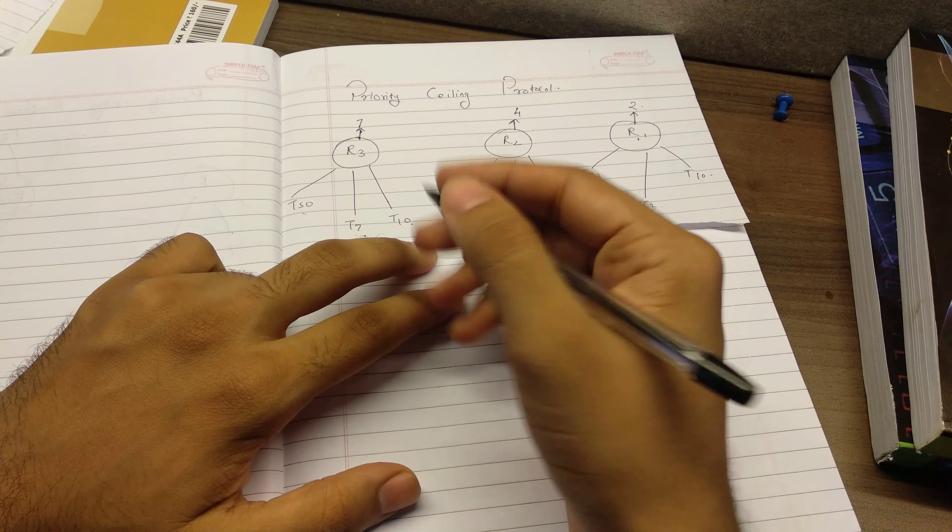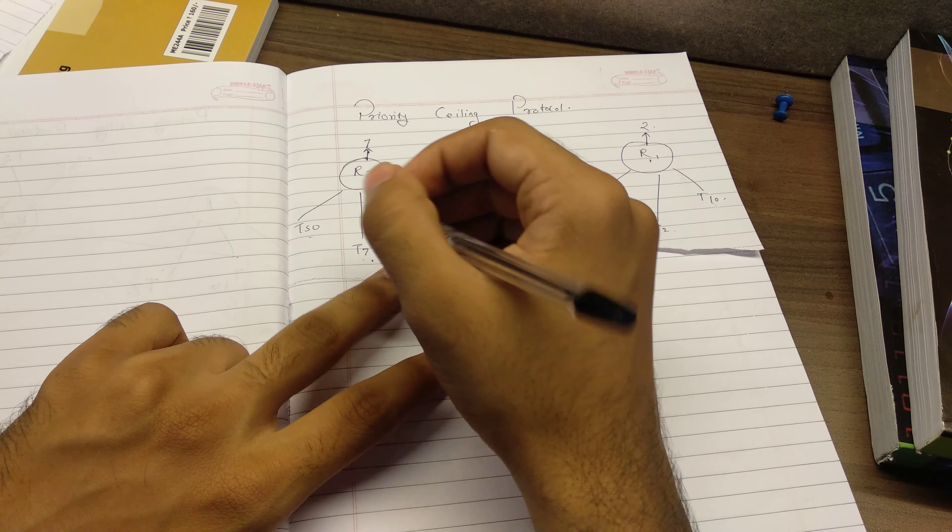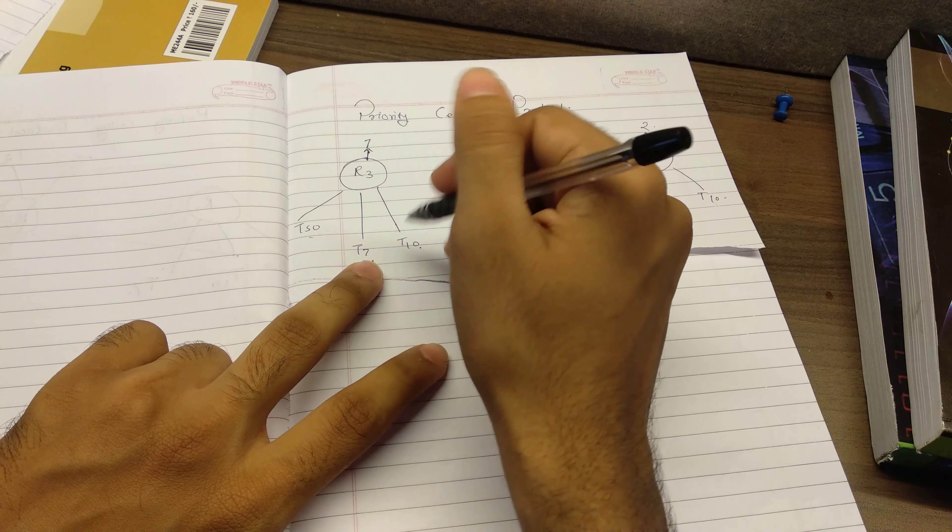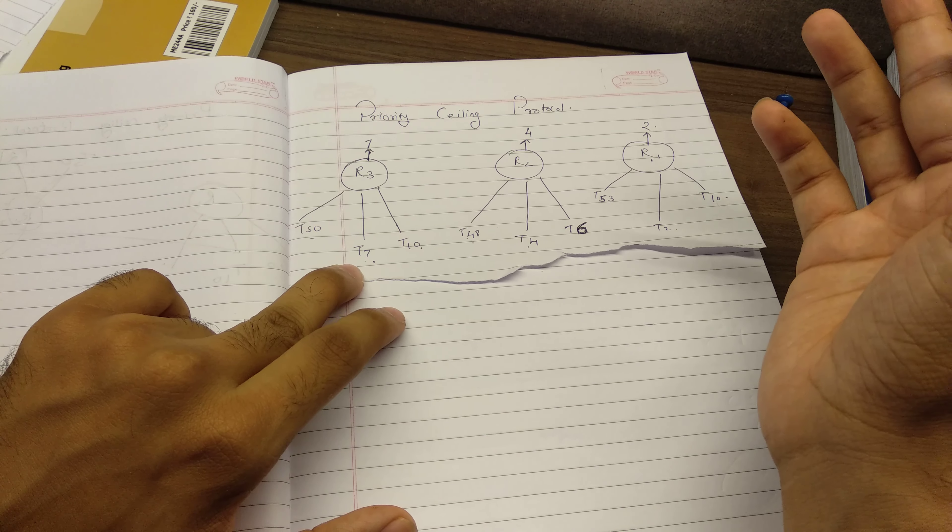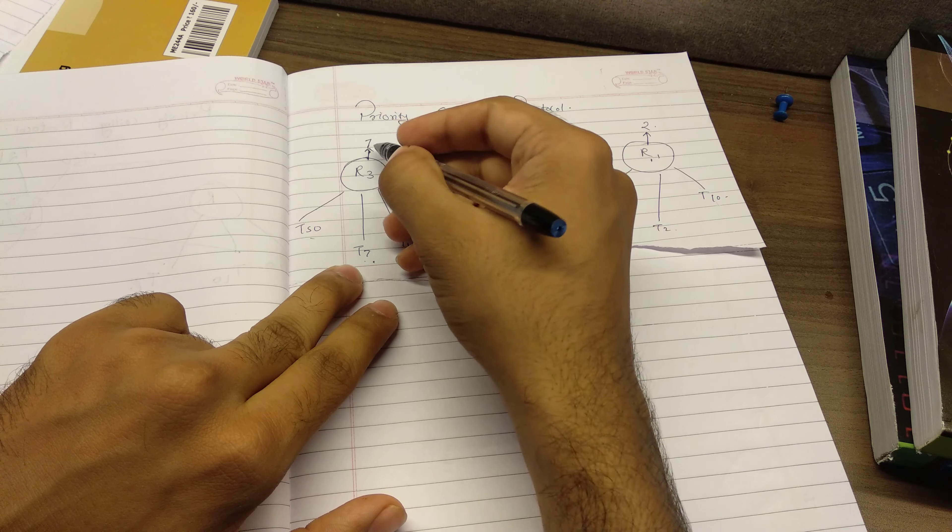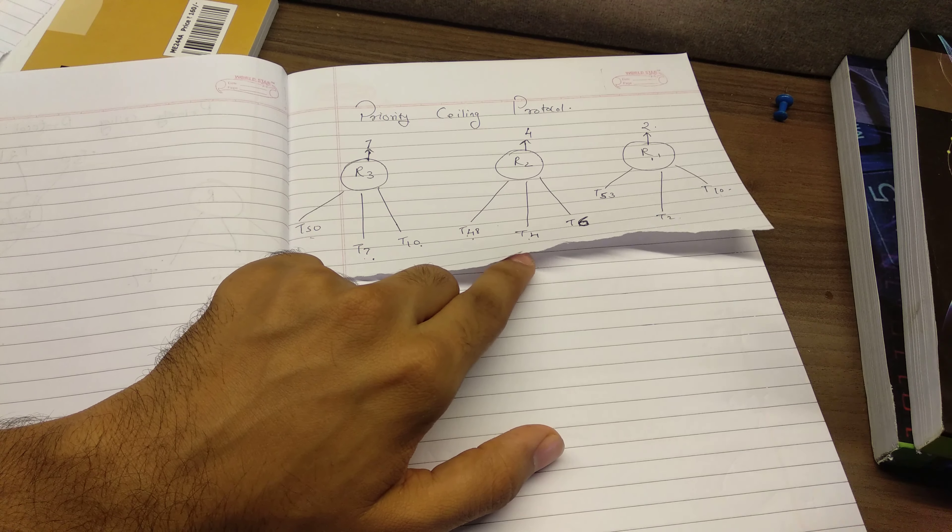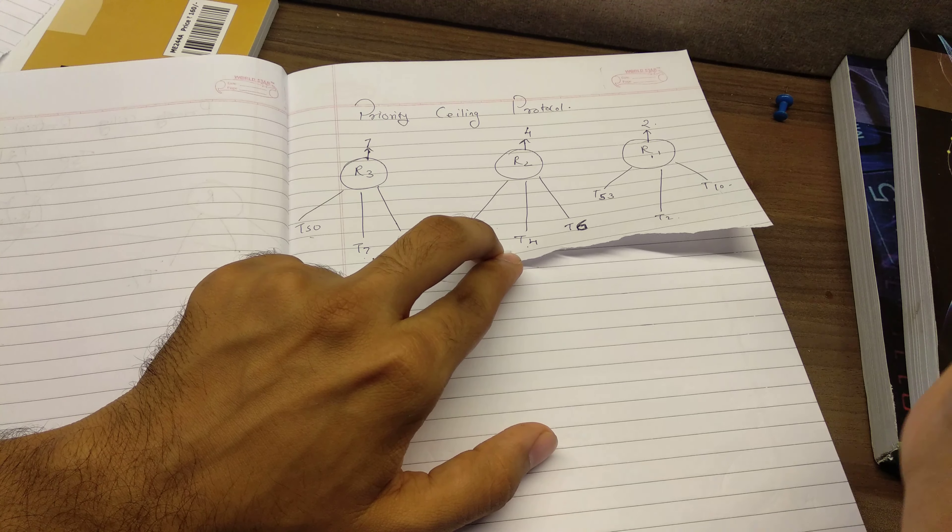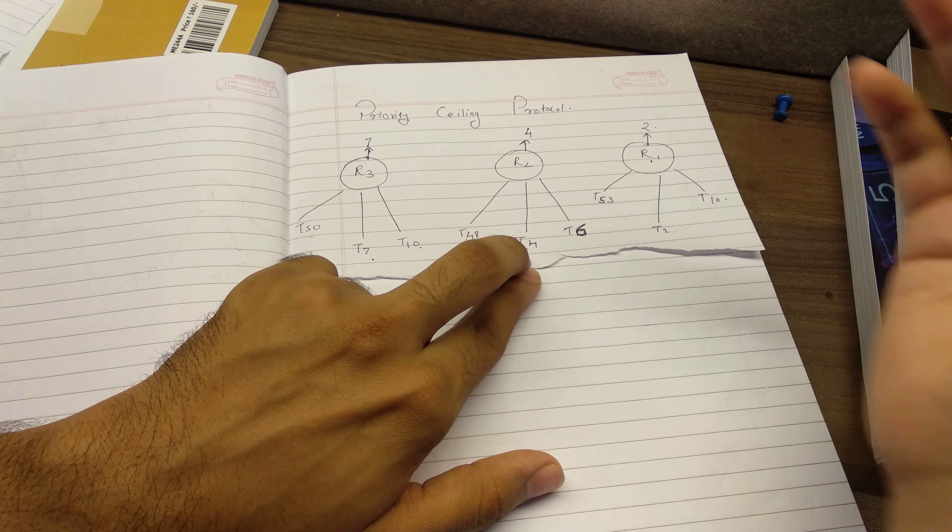So according to this, the resource is given a ceiling value and that is the maximum priority of the tasks that are going to use the resource. So here we are just assuming that task number is the priority of the task itself. So here it would be 7, here it would be 4 and this is decreasing priority. So basically one is the highest priority and 64 is the lowest priority.